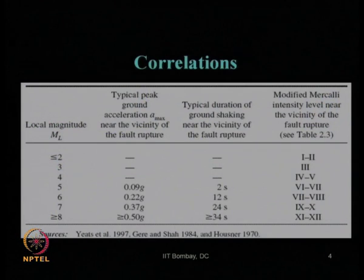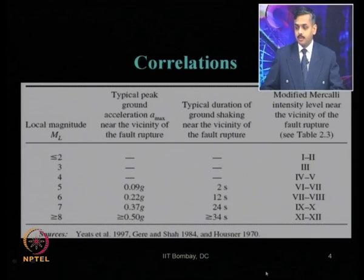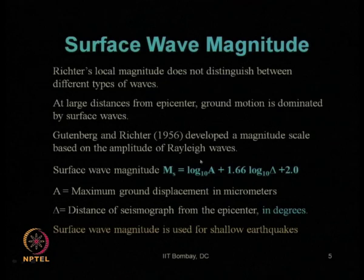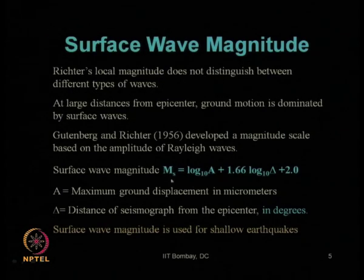A quick recap of what we have learnt in the previous lecture. We have seen the correlations between local magnitude or Richter magnitude and the MMI scale, that is Modified Mercalli Intensity scale, and corresponding typical peak value of ground acceleration and typical duration of ground shaking. We also discussed surface wave magnitude and the proposed equation by Gutenberg and Richter in 1956 — how to estimate the surface wave magnitude knowing the maximum ground displacement and the distance of the seismograph from the epicenter.